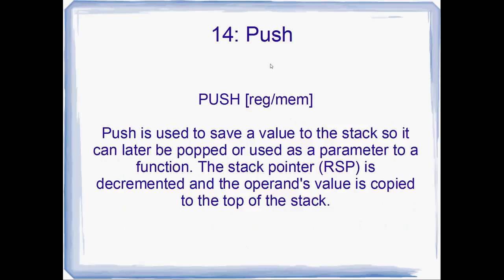Number 14: PUSH. PUSH is used to save a value to the stack so that it can later be popped or used as a parameter to a function. The stack pointer, RSP, is decremented and the operand's value is copied to the top of the stack. PUSH is really, really important and used all over the place — it's used to pass parameters to functions, but also to save values of registers temporarily. If you want to use a non-scratch register like RBX in your function, you want to push its value to the stack first, because C++ expects that RBX is not changed. So push non-scratch registers at the start and pop them just before RET.